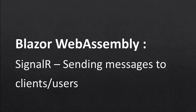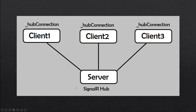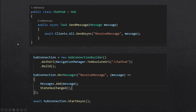Hello everyone. In this episode I'm going to talk about how we can send messages to particular clients or users using SignalR in Blazor WebAssembly applications. In the previous episode I talked about how we can create a SignalR hub on the server side and a hub connection on the client side so that we could send and receive messages. But instead of sending messages to all of our clients, I would like to send messages to only particular users.